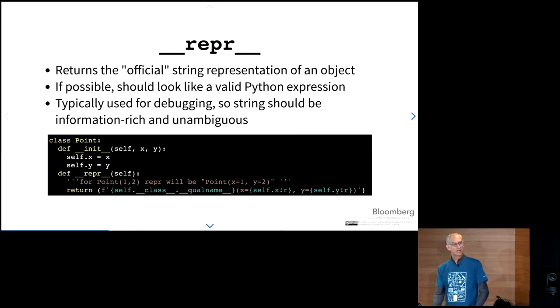Also in the basic customization is Dunder repr. This is the official string representation of an object. If possible, and this is from the documentation, it should look like a valid Python expression. This is the string representation that is typically used for debugging. So it should be information rich and unambiguous. So if you have spent any time at the Python REPL and you've typed a variable name and then watched what the values get dumped out, you've invoked Dunder repr.